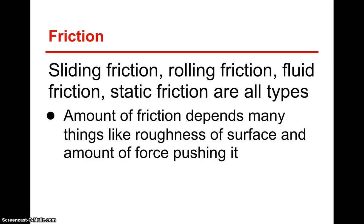Ice skating — it's not very difficult to overcome the friction on the surface of ice because there's not a lot of roughness. It's very, very smooth. Same thing if you poured a bunch of oil on the ground — it's not difficult to overcome the friction on the ground if you spilled oil or if you're in the kitchen and some vegetable oil got spilled. You can overcome that friction very, very easily.